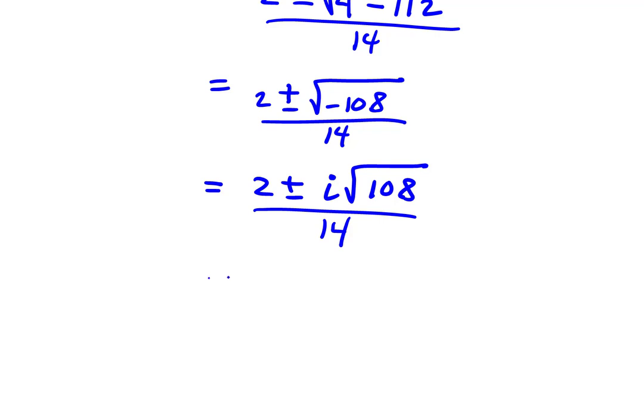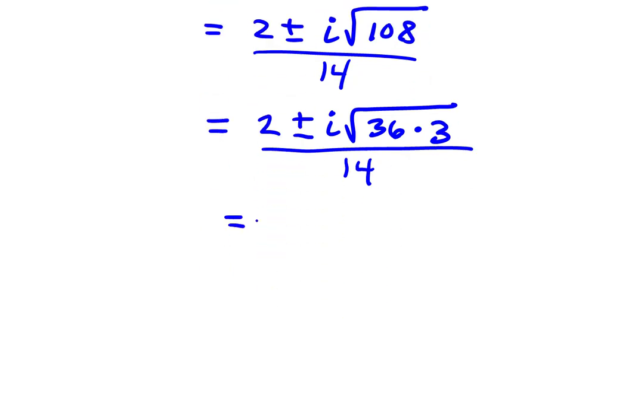If we reduce the square root, we'll end up with 2 ± i√108, let's see, this is i times the square root of 108, could be written as 36 times 3. And that will help us reduce the root, of course, this is all still over 14,